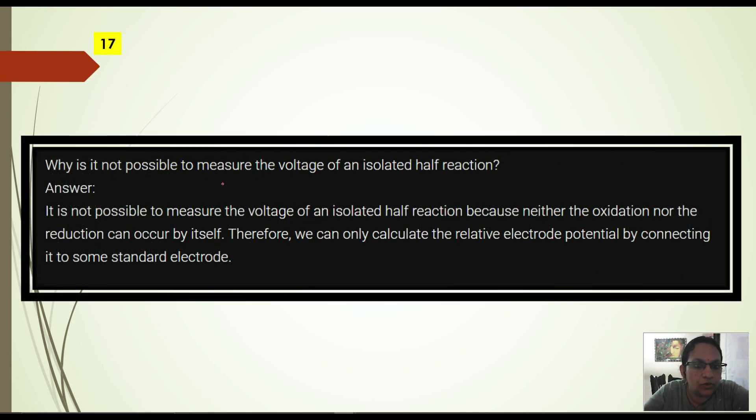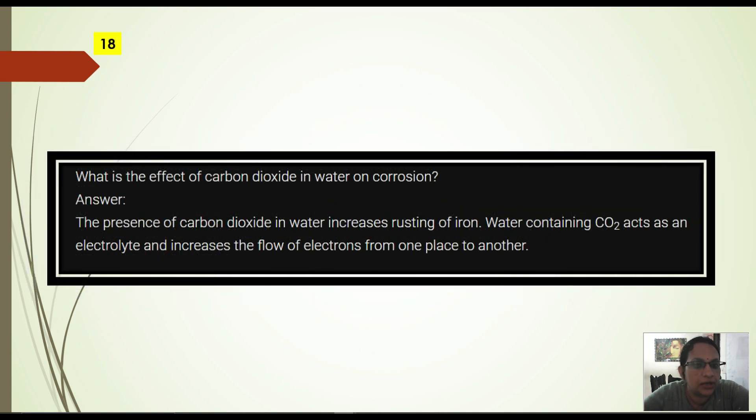Next. Why is it not possible to measure the voltage of isolated half reaction? We never measure the voltage of half reaction. It is not possible and this is why this is an important question. Why is it not possible to measure the voltage of isolated half reaction? Because neither the oxidation nor reduction can occur by itself. Therefore we can calculate only the relative electrode potential by connecting it with some standard electrode. Some standard electrode like hydrogen or platinum, then we can compare whether oxidation will occur. That is why in isolation half cell value is not measured.